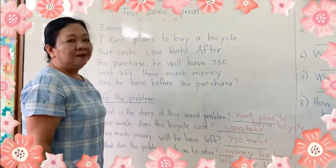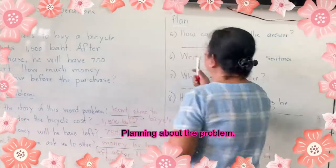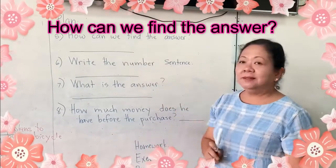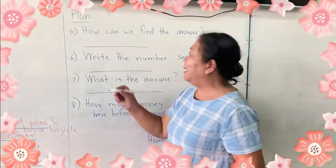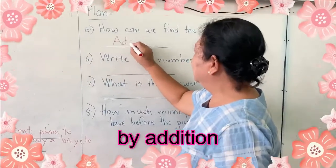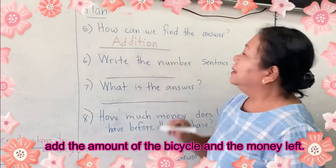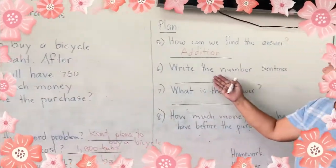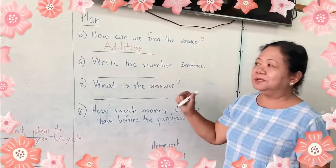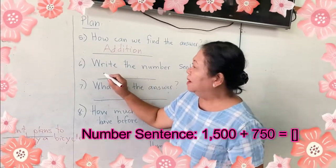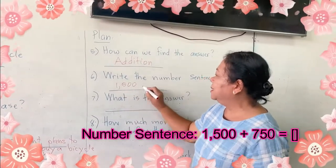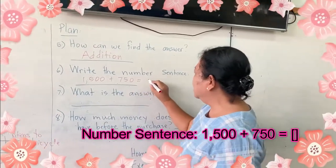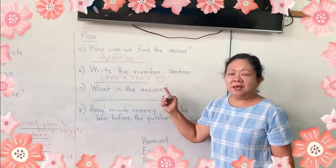Next is planning about the problem. Number five: how can we find the answer? We can find the answer by addition. We will add the amount of the bicycle and the money left. The number sentence will be 1,500 plus 750 is equal to what — we don't know the answer yet.